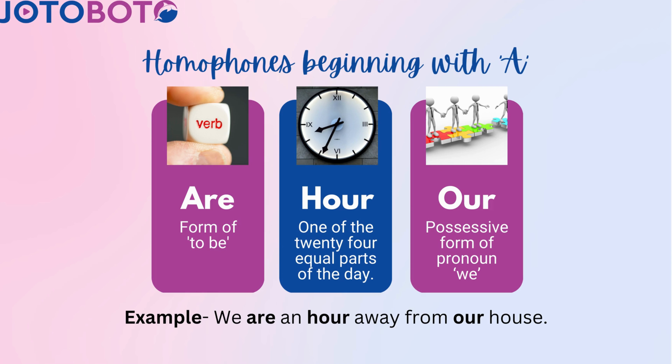A-R-E: 'are' is a form of 'to be.' H-O-U-R: 'hour' means one of the 24 equal parts of the day. O-U-R: 'our' is the possessive form of the pronoun 'we.' We were an hour away from our house.